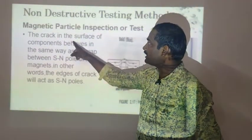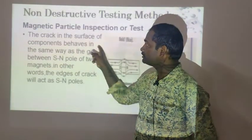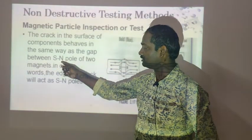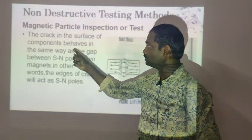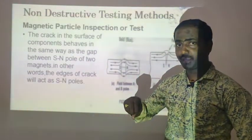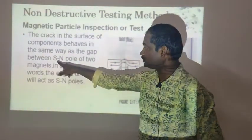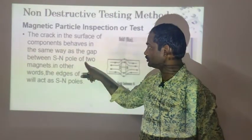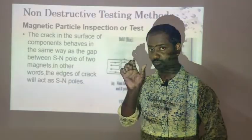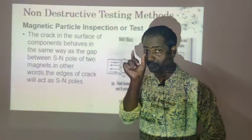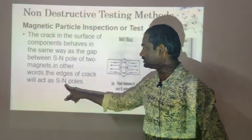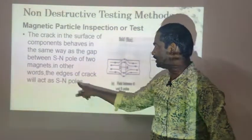A crack in the surface of the component behaves in the same way as a gap between a south pole and a north pole. The magnetic field is formed between two magnets — south pole and north pole — and the edges of the crack will act as south and north poles.